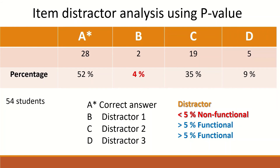As we can see, distractor B is selected by less than 5% of the students, so it is non-functional and useless. However, distractor C and D are each selected by more than 5% of the students, thus they are functional and effective.